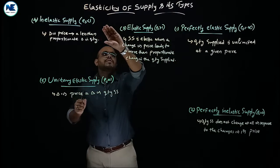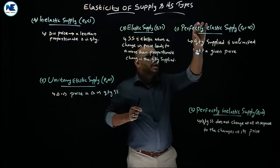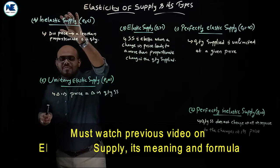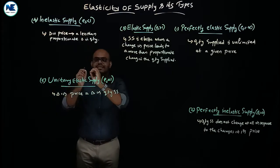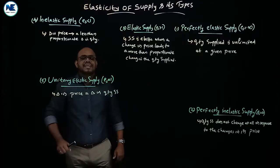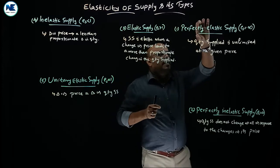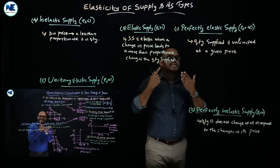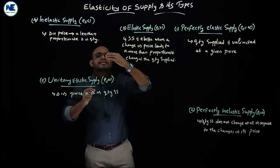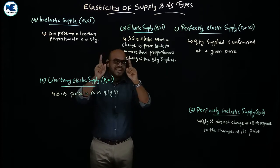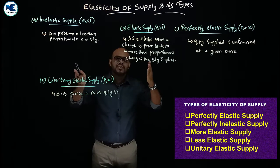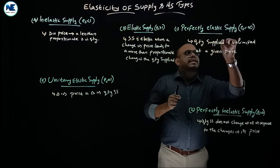We can see five types of elasticity of supply: perfectly elastic supply, perfectly inelastic supply, elastic supply, inelastic supply, and unitary elastic supply. The classification is based on the value of the coefficient of elasticity of supply, which ranges from zero to infinity.